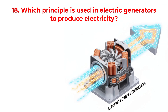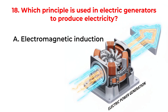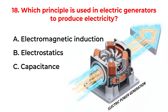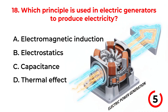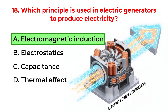Which principle is used in electric generators to produce electricity? A. Electromagnetic induction. B. Electrostatics. C. Capacitance. D. Thermal effect. Correct answer is option A. Electromagnetic induction.